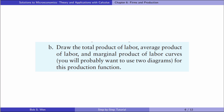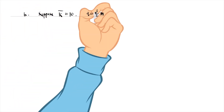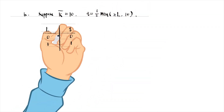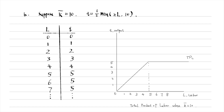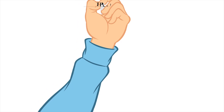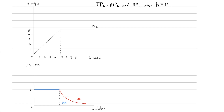In part B, draw the total product of labour, average product of labour, and marginal product of labour curves for this production function. Suppose capital is fixed at 10 units. We list the quantities of output as labour increases in the table. According to the values, we draw the total product of labour curve. Then we draw the marginal product of labour and the average product of labour curves. The marginal product of labour is the slope of the total product of labour curve.